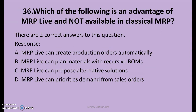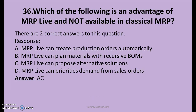36th question. Which of the following is an advantage of MRP Live and not available in classical MRP? There are two right answers. A. MRP Live can create production orders automatically. B. MRP Live can plan materials with recursive BOMs. C. MRP Live can propose alternative solutions. D. MRP Live can prioritize demand from sales orders. Options A and C are not correct answers. The right answers are B and D: MRP Live can plan materials with recursive BOMs, and MRP Live can prioritize demand from sales orders.